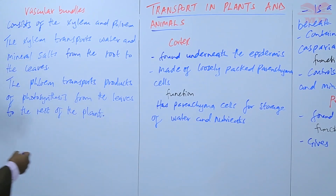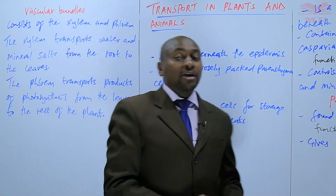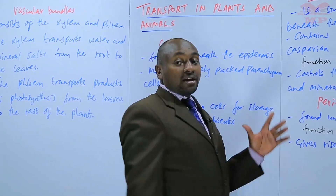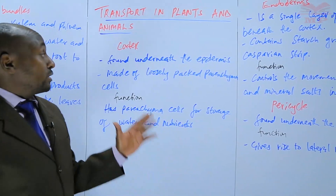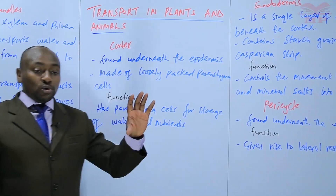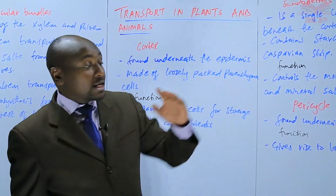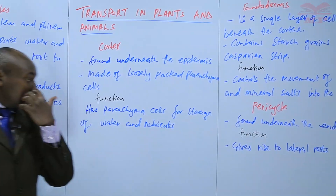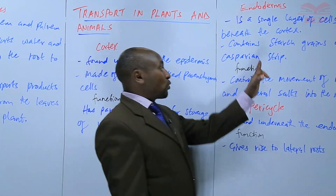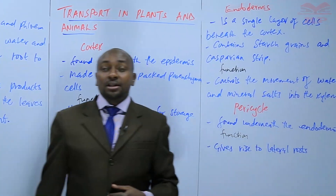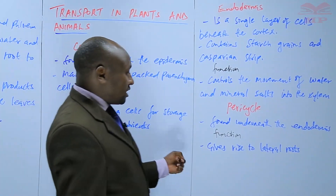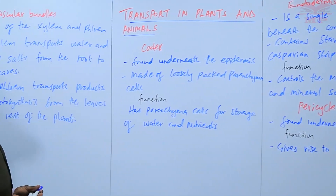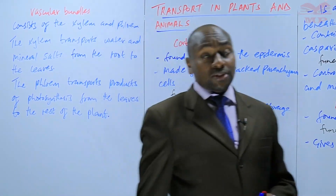So basically, that is all about the root. We have seen the various tissues that make the root. We started by studying the root hairs, the root cap, and the various zones: cell division, cell differentiation, and cell elongation. Then we studied the cortex, whose function is storage; the endodermis, which controls movement of water and mineral salts into the xylem; the pericycle, which gives rise to lateral roots; and finally the vascular bundles, made of xylem and phloem, and we have looked at their functions.